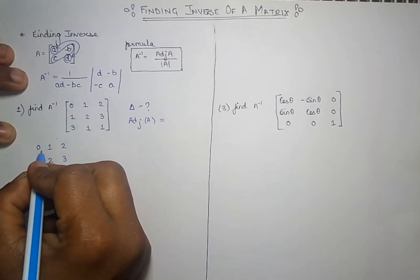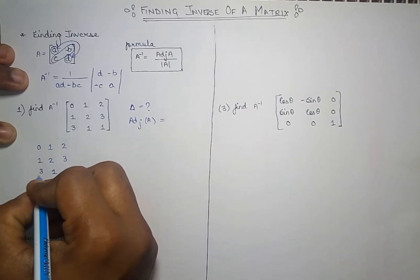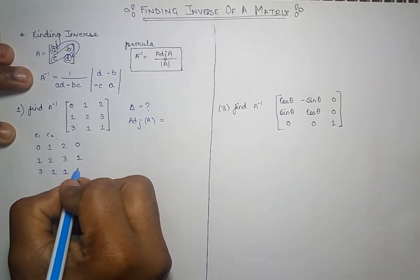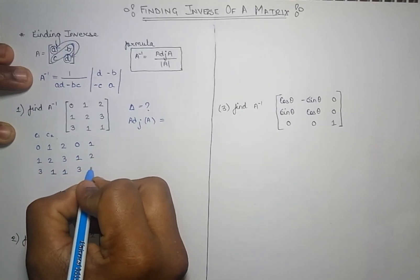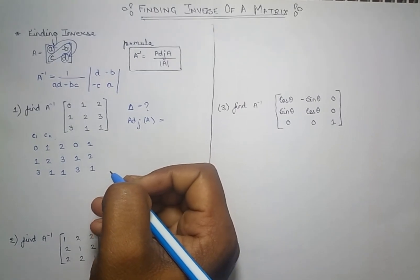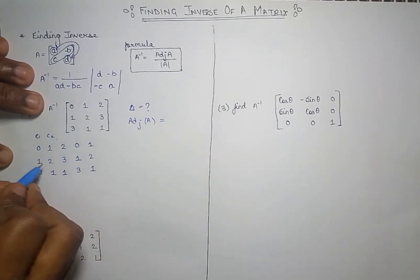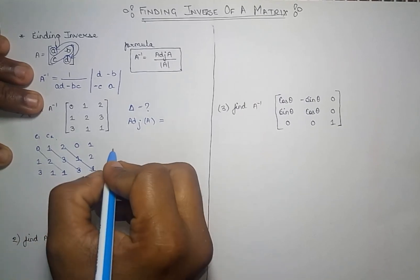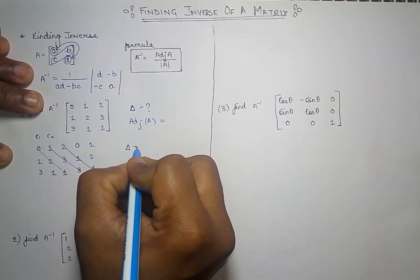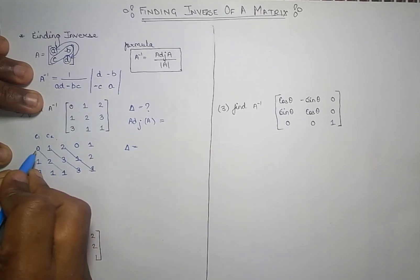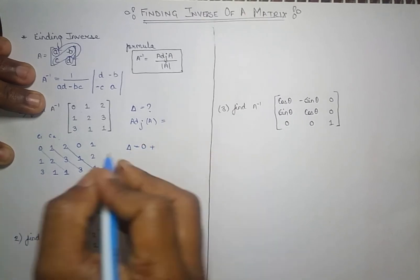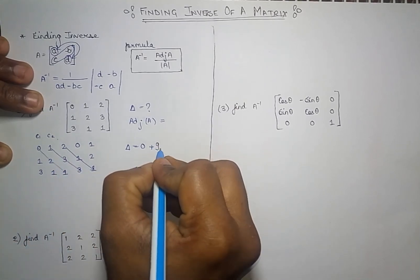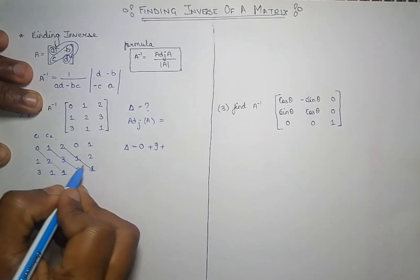Write down the three rows of the matrix as they are, then write down the first two columns again next to it. For finding the determinant, multiply diagonally from left to right: the first product is 0 (because zero is in that position), the next gives 9, 1, 3, 3, and multiplying all three gives 2.